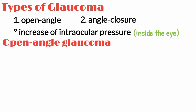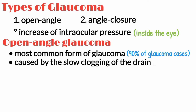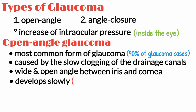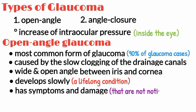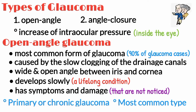Open angle glaucoma is the most common form of glaucoma, accounting for at least 90% of all glaucoma cases. It is caused by the slow clogging of the drainage canals, resulting in increased eye pressure. It has a wide and open angle between the iris and cornea. It develops slowly and is a lifelong condition, with symptoms and damage that are often not noticed. It is also called primary or chronic glaucoma, affecting about 3 million Americans.